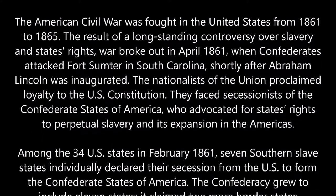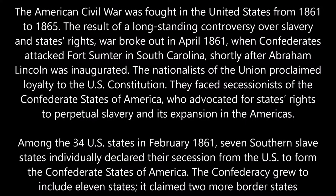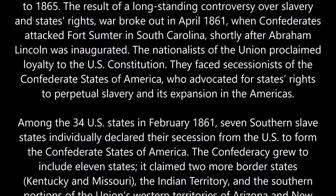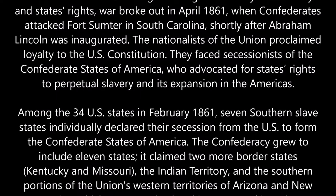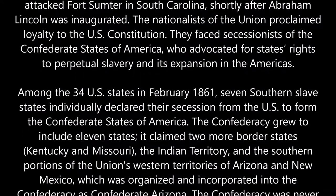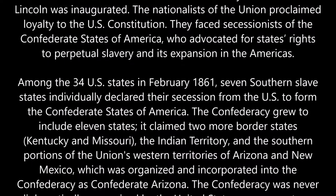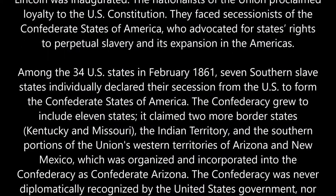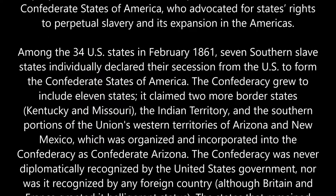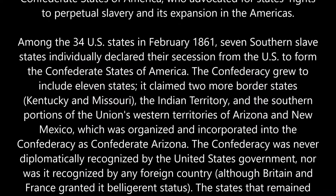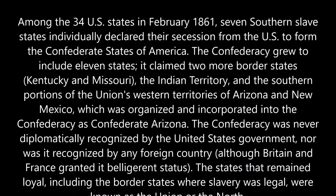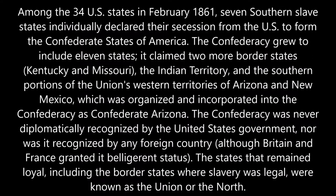Among the 34 U.S. states in February 1861, seven southern slave states individually declared their secession from the U.S. to form the Confederate States of America. The Confederacy grew to include 11 states, it claimed two more border states, Kentucky and Missouri, the Indian Territory, and the southern portions of the Union's Western Territories of Arizona and New Mexico, which was organized and incorporated into the Confederacy as Confederate Arizona.